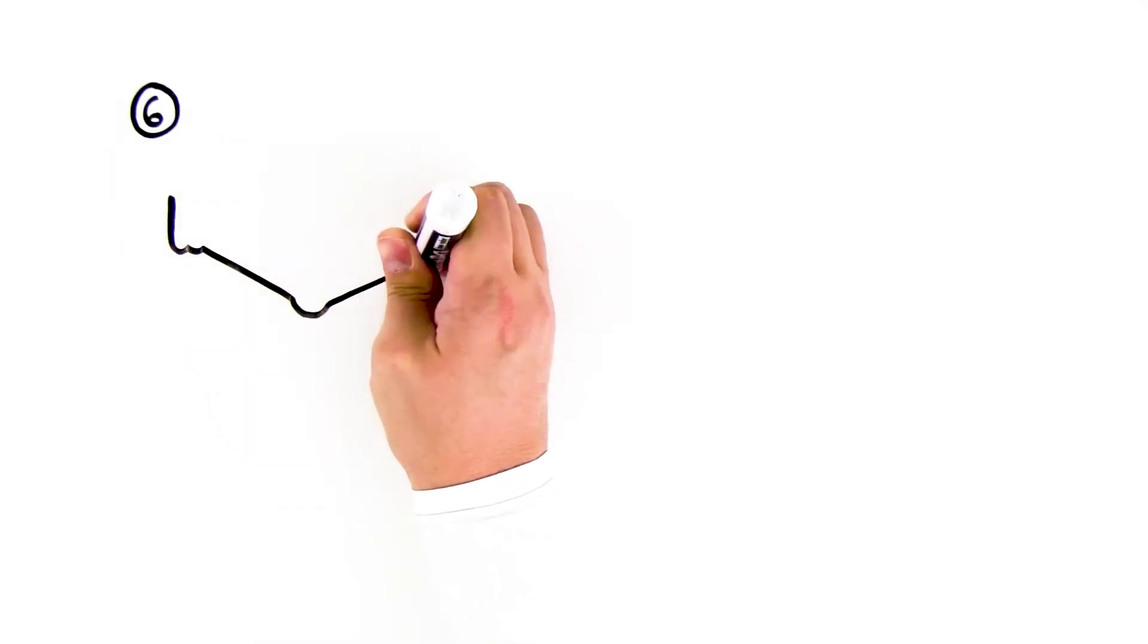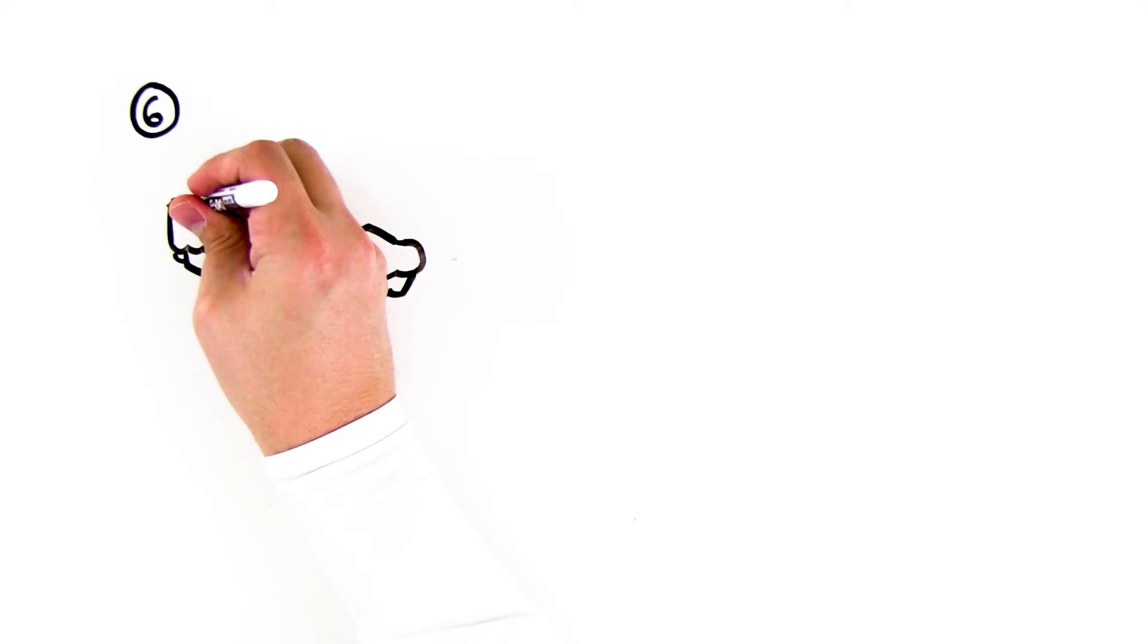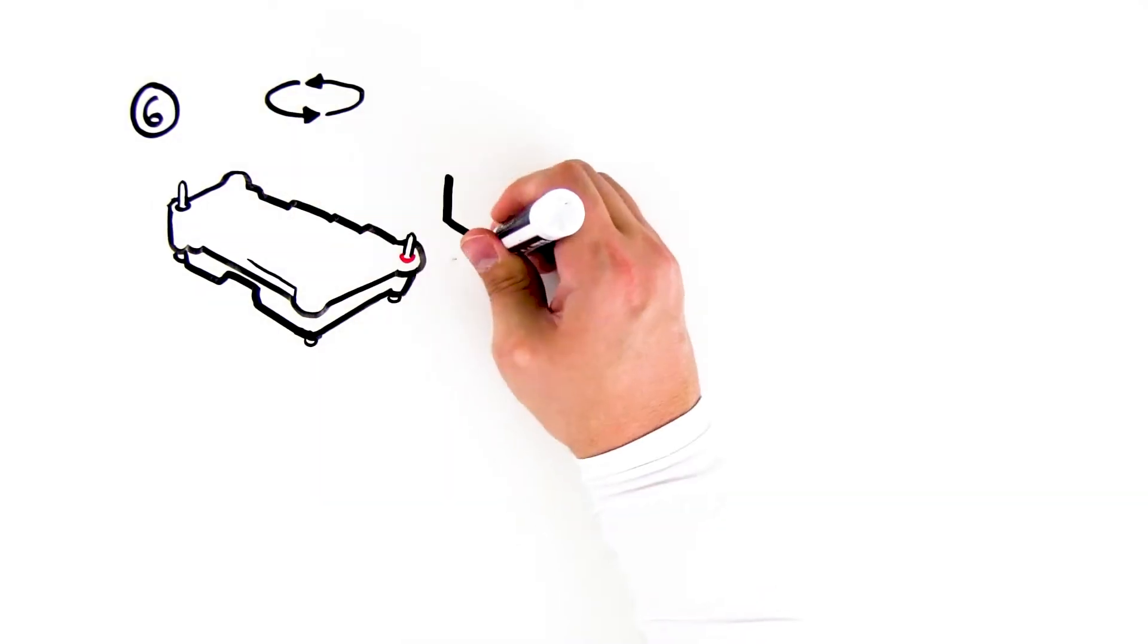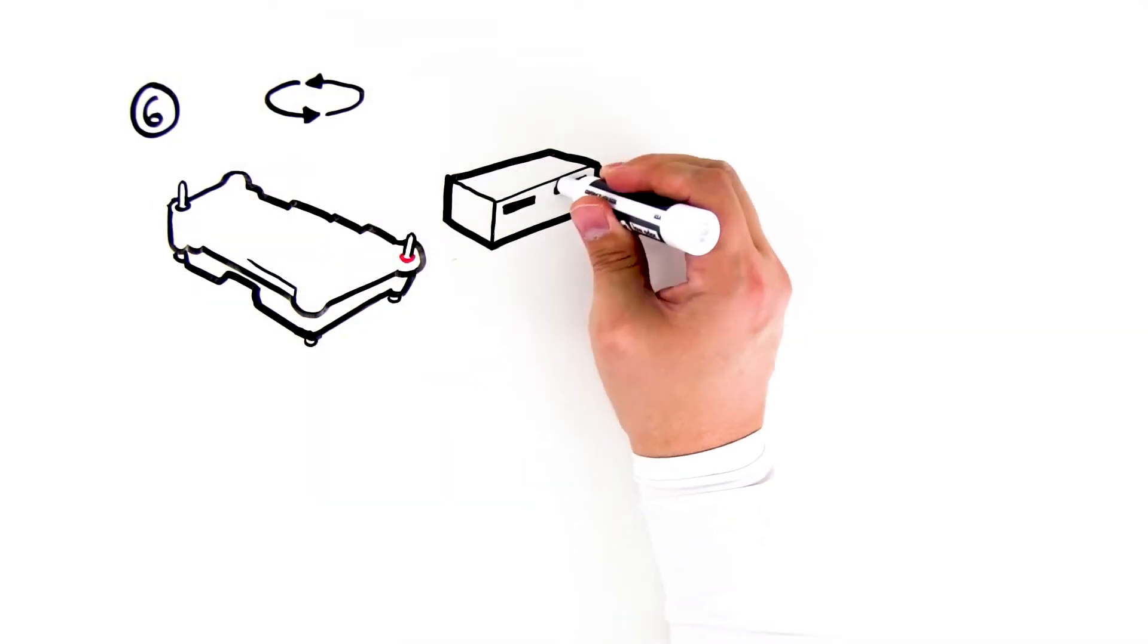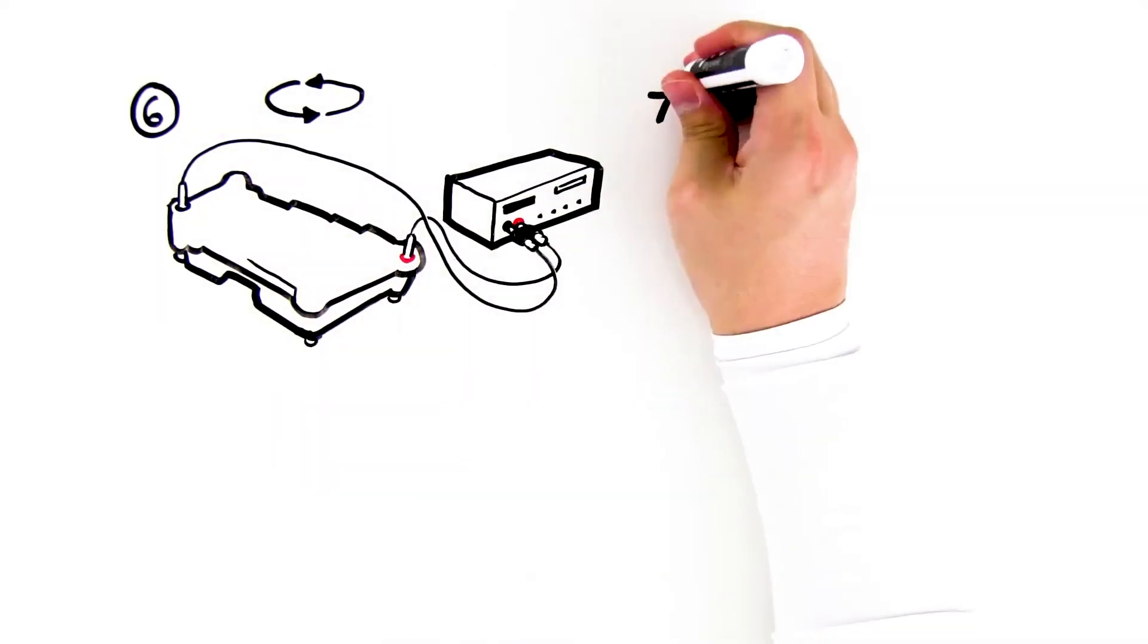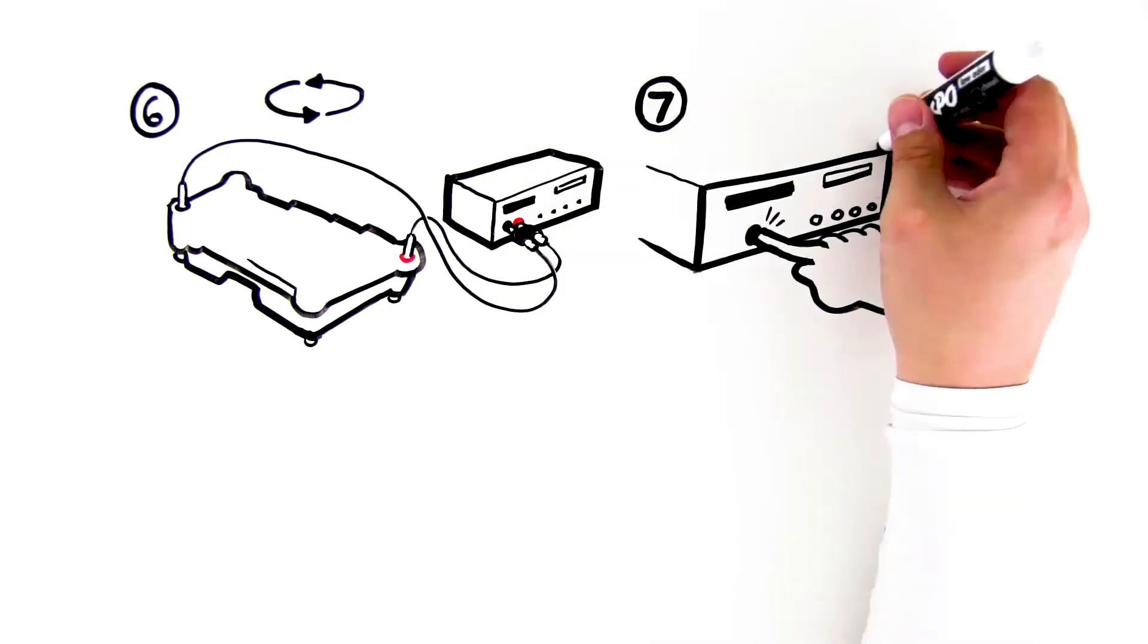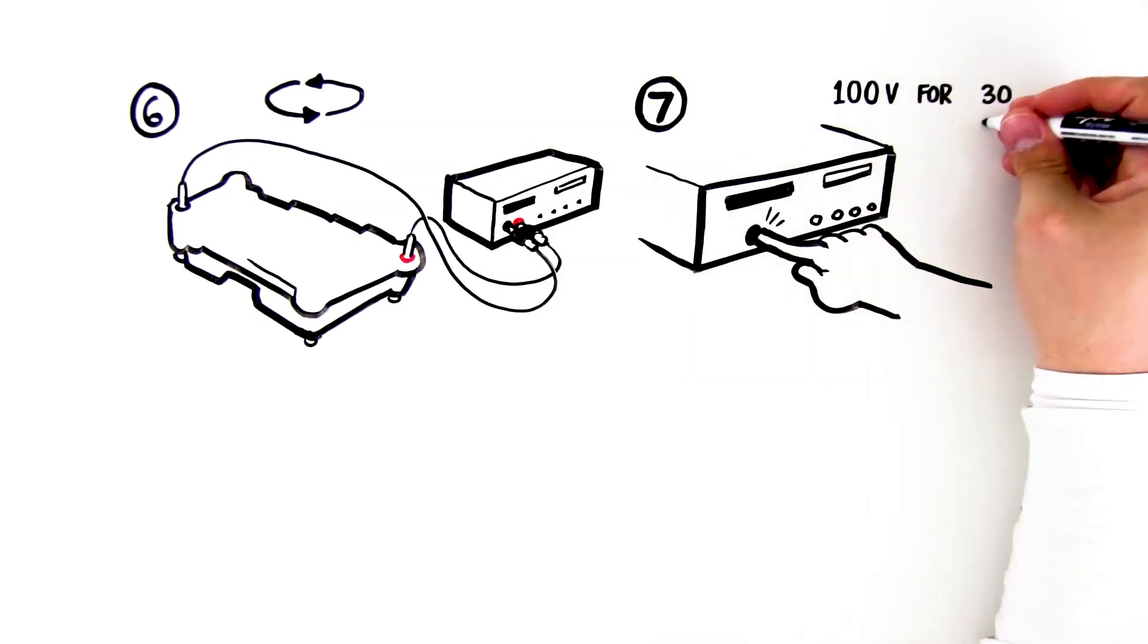Sixth, place the lid on the electrophoresis chamber. The lid will attach to the base in only one orientation. The red and black jacks on the lid will match with the red and black jacks on the base. Plug the electrodes into the power supply. Seventh, turn on the power and electrophoresis your samples at 100 volts for 30 minutes.